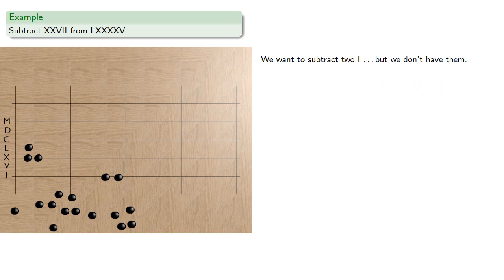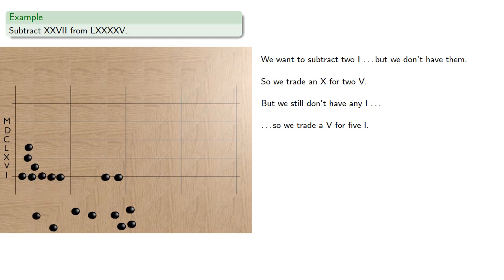So we can get them by trading. We trade an X for 2V, but we still don't have any I's, so we'll trade a V for 5I's. And now we can subtract the two.